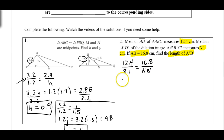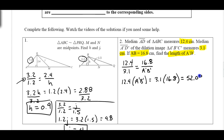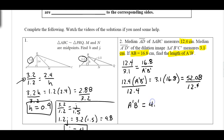We're going to cross multiply. So I get 12.4 times A prime B prime is equal to 3.1 times 16.8. If I multiply that out I get 52.08. Divide both sides by 12.4 and we end up with the segment on the image being 4.2 centimeters.